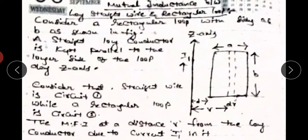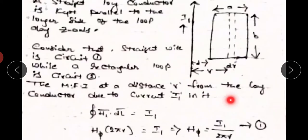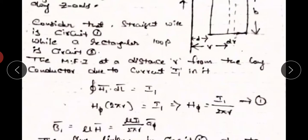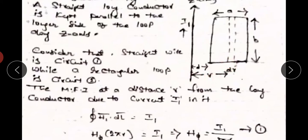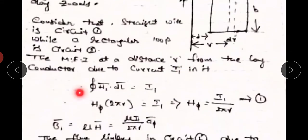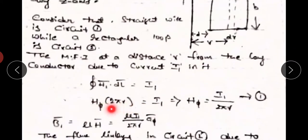Consider a differential rectangle at a distance R from the straight conductor, where the height equals B and the differential length equals dR. By Ampere's circuit law: the closed line integral of H̄ · dL̄ equals the enclosed current. Here the enclosed current equals I₁, so H · 2πR = I₁, giving H_φ = I₁ / 2πR.